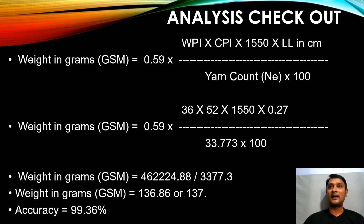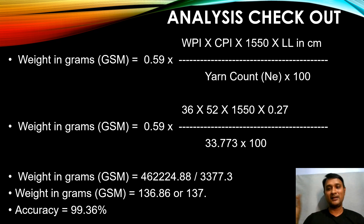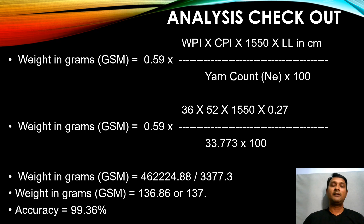Our direct measurement gave 136 g/m², and the GSM calculator gives 136.86 g/m², so the accuracy of our analysis is 99.36% — a very accurate result. For light-weight fabrics, a GSM difference of up to 5 grams is acceptable. Minor rounding differences in the values can cause small deviations, but the accuracy level should not fall below 95%. If it does, you need to retest the sample to improve accuracy.